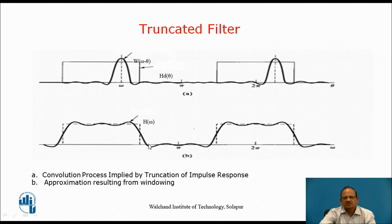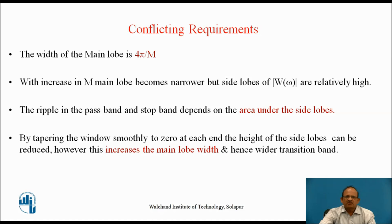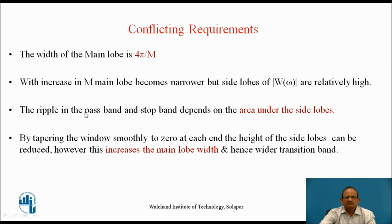The transition from passband to stopband takes some width. The width of the transition band depends on the main lobe width, whereas the peak of the side lobes depends on the peak side lobes of the window function. The main lobe width is 4π/M for the rectangular window. With an increase in M, the main lobe becomes narrower, improving the transition characteristics, but the side lobes are relatively high, increasing the stopband ripple. The ripple in passband and stopband depends on the area under the side lobes.